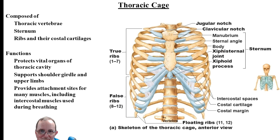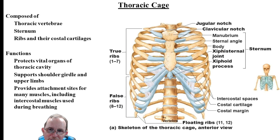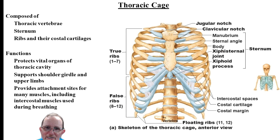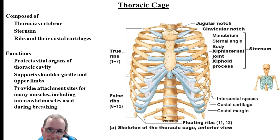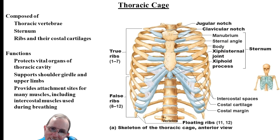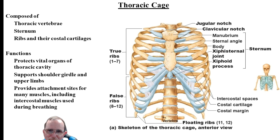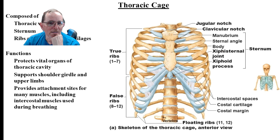The thoracic cage is made up of the sternum in the middle, the vertebrae in the back, and the ribs. The ribs don't attach directly to the sternum — they attach to costal cartilage which attaches to the sternum. The first seven pairs actually attach directly via cartilage to the sternum. Ribs eight through twelve don't attach to the sternum the same way. The thoracic cage is here to protect your lungs and heart, provide support for the shoulder blades and upper limbs, and give attachment for many muscles.